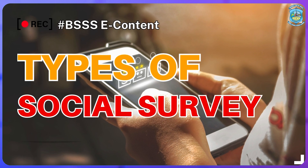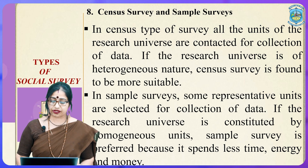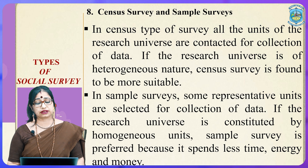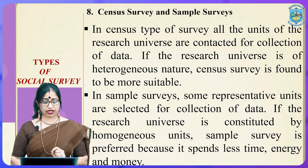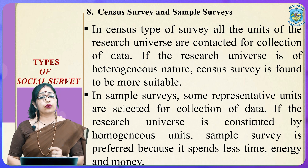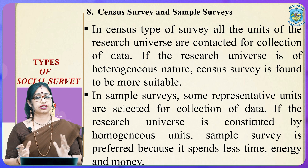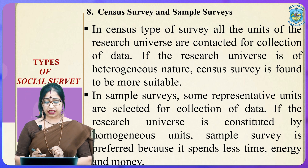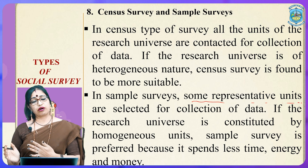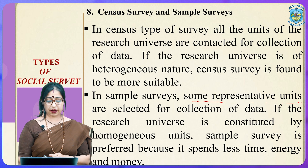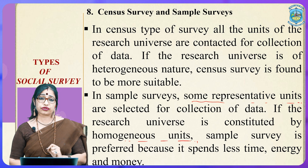The next type is census surveys versus sample surveys. In census surveys, all units of the research universe are contacted for data collection. If the research universe is of heterogeneous nature, census surveys are found to be more suitable, covering a large geographical or demographic area. In sample surveys, representative units or samples are collected. If the research universe is constituted by homogeneous units, sample surveys are preferred because they spend less time, energy, and money.